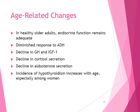What are some age-related changes that occur? In healthy older adults, endocrine function remains adequate — adequate, not perfect. We see a diminished response to ADH, declines in growth hormone, decline in cortisol secretion, decline in aldosterone secretion, and the incidence of hypothyroidism increases with age, especially among women.